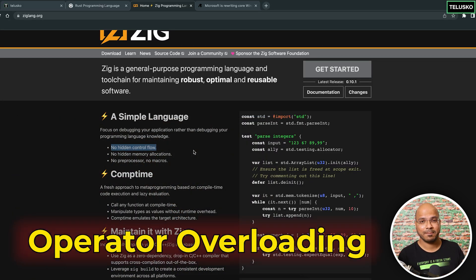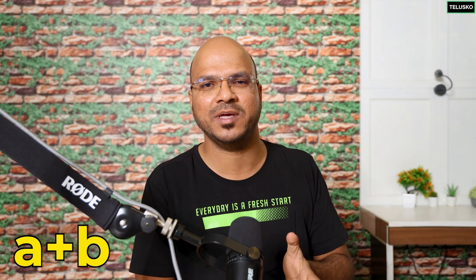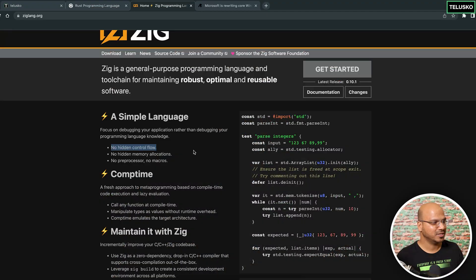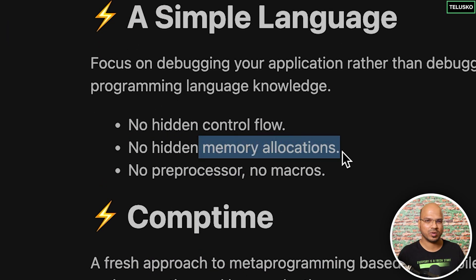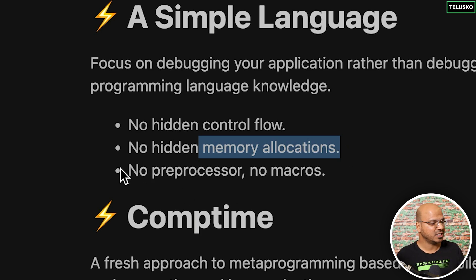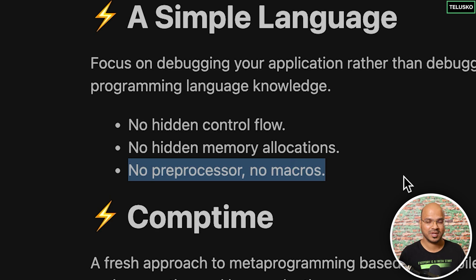With operator overloading, if you write A plus B you're not sure if it's adding or calling a function — there's a hidden flow behind the scene. Zig says let's not do that. There's no hidden control flow, no hidden memory allocation — you have to allocate memory yourself — and also no preprocessor and no macros.